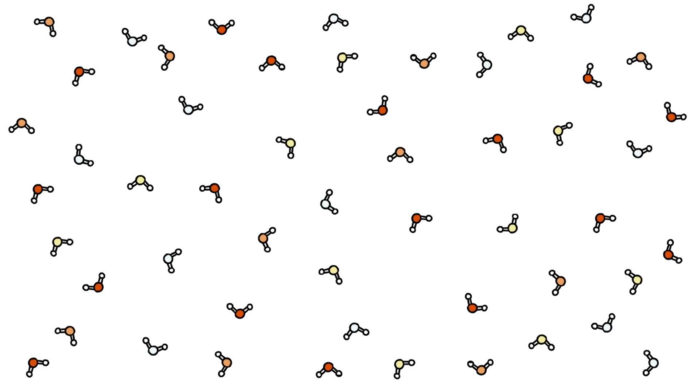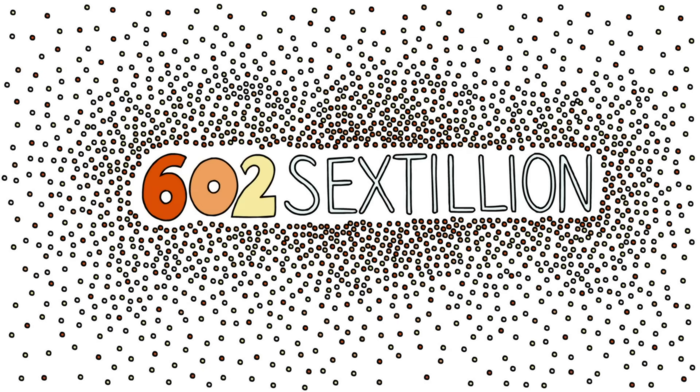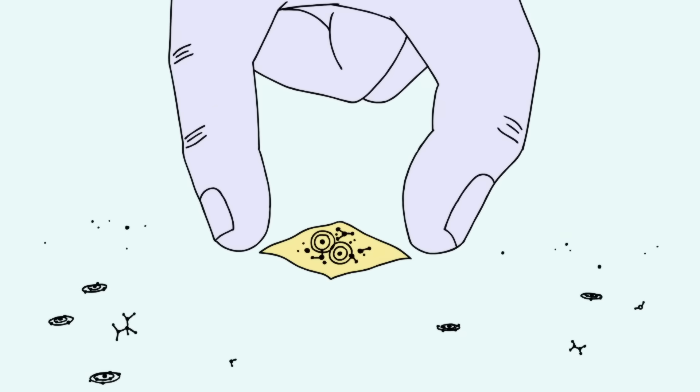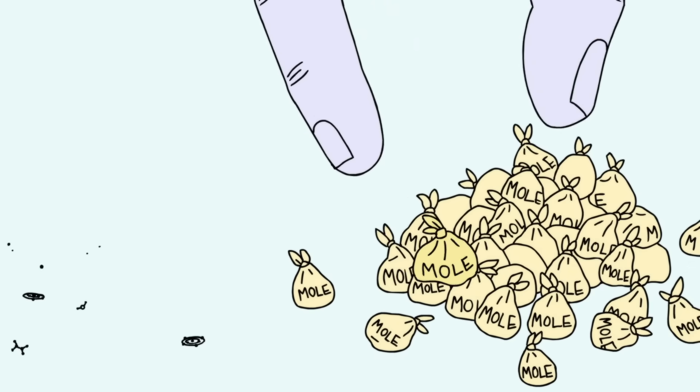Chemists use the term mole to refer to the quantities that are at the magnitude of 602 sextillion. This is known as a molar quantity.